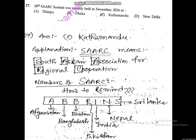The next question asks: where was the 18th SAARC summit held — Thimphu, Dhaka, Kathmandu, or New Delhi? The answer is option C — Kathmandu. SAARC stands for South Asian Association for Regional Cooperation. A mnemonic to remember member countries is 'A BB PINS': Afghanistan, Bangladesh, Bhutan, Pakistan, India, Nepal, and Sri Lanka — all of India's neighboring countries.